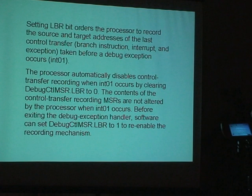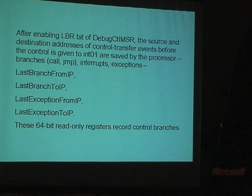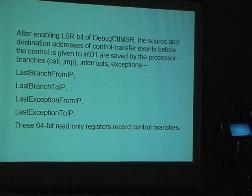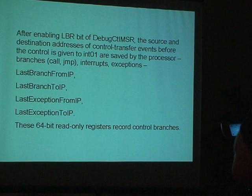Before exiting the debug exception handler, software can set this bit to one to re-enable the recording mechanism. After enabling bit zero of this control register, the source and destination addresses of control transfer events before control is given to interrupt 1 — branches, interrupts, exceptions — are saved by the processor. We have four registers, four records of what happened before interrupt 1. These are 64-bit read-only registers.